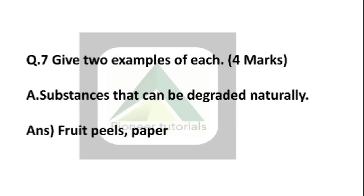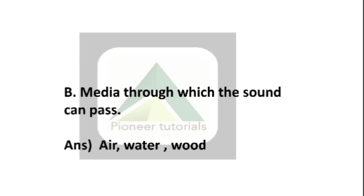Question number 7: Give two examples of each substance that can be degraded naturally. The answer is fruit, pills, and paper — if you know more, you can write those also. Question 7B: Media through which sound can pass. The answer is air, water, and wood.